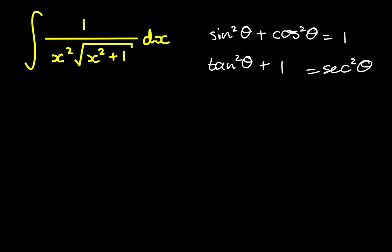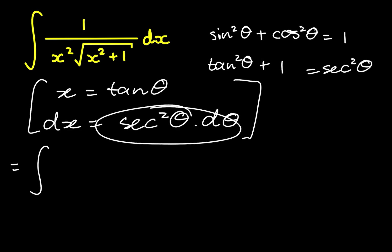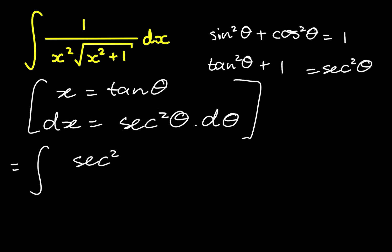Let's make the substitution: x equals tan of theta. The derivative of x in terms of theta is going to be secant squared of theta. Now we can make these substitutions. Our integral is now equal to... for dx, we swap in secant squared of theta d theta.